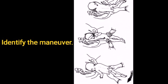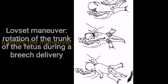Identify the maneuver: Løvset maneuver — rotation of the trunk of the fetus during breech delivery.